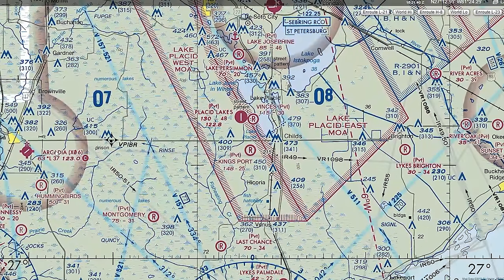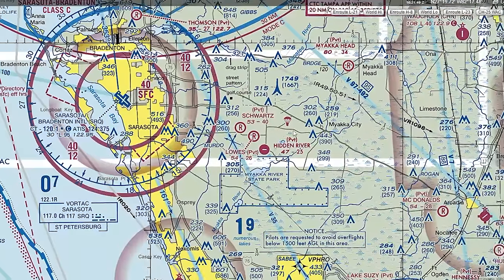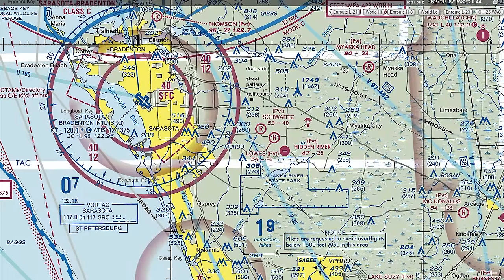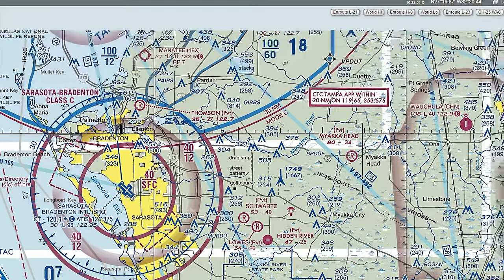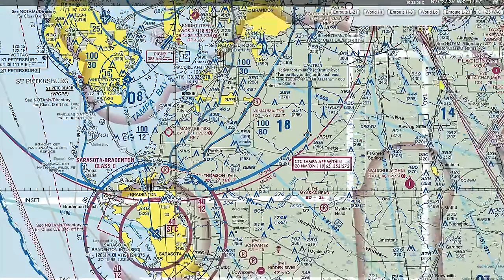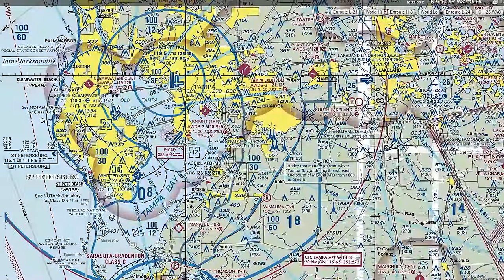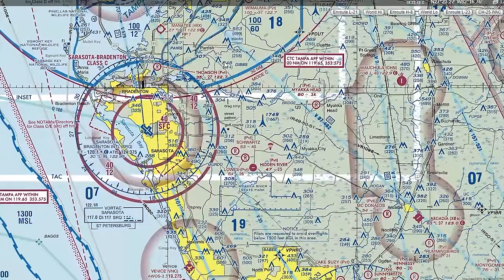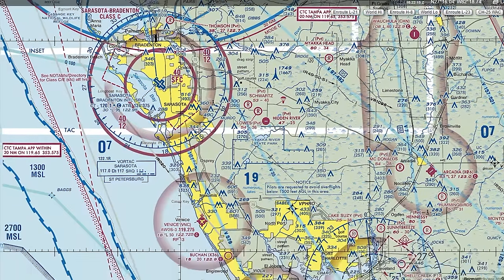There's also different airspace to note here. MOAs — military operations areas — and restricted airspace are shown on the chart. Class Charlie airspace is the solid magenta ring, such as around Sarasota Airport, with some Echo airspace coming to the surface. Tampa Class Bravo surrounds the Tampa area in several rings — that upside-down wedding cake shape. Links in the description will cover Class A, B, C, D, E, and G airspace in detail. There is no F airspace.